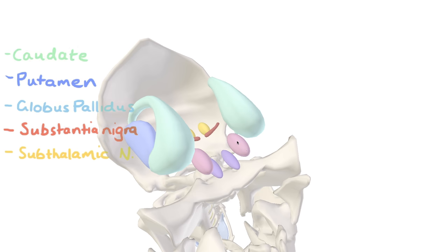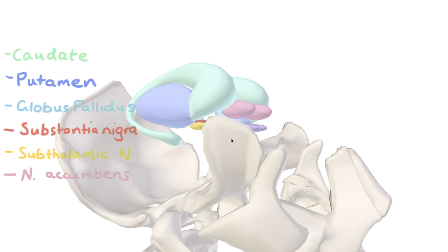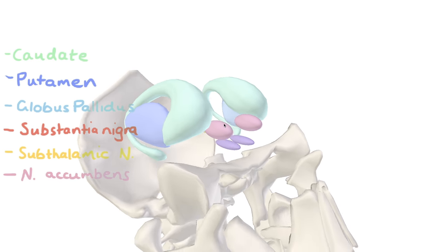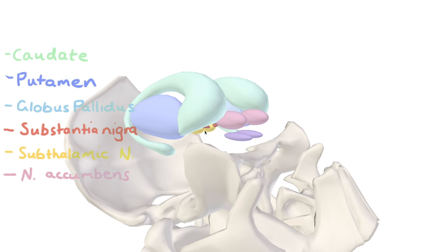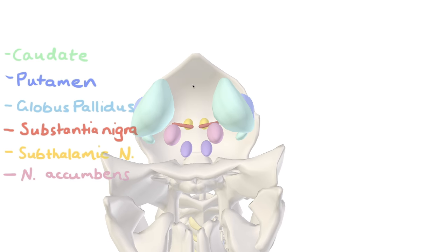We have the nucleus accumbens, which sits medial to the adhesion of the caudate and the putamen and immediately lateral to the septum pellucidum, which runs directly down the midline of the brain.